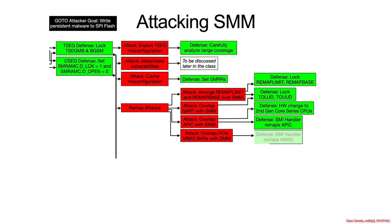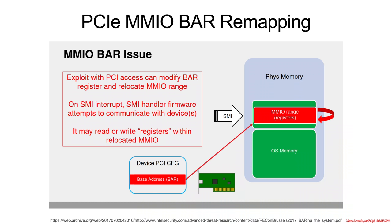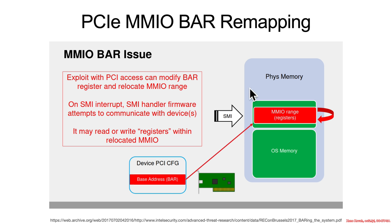The last remapping attack is overlapping PCIe MMIO BARs with SMM. An attacker overlaps a BAR with SMM — but it can't be just any BAR; it has to be one that the SMI handler itself actually accesses. The research showed a bunch of different base address registers accessed via SMI handlers. Step one: from outside the OS, overlap the MMIO range with SMM. Step two: wait for the SMI handler to write to what it thinks is a PCI memory-mapped IO range, but it will actually be redirected within the context of SMM and overwrite itself somewhere inside that range.